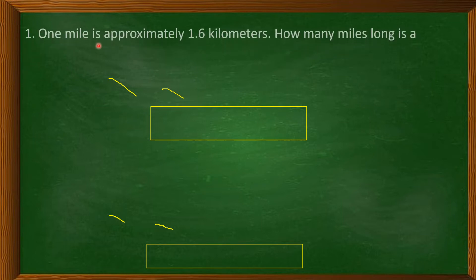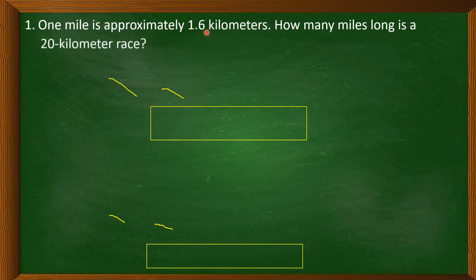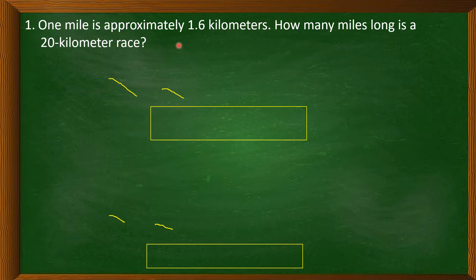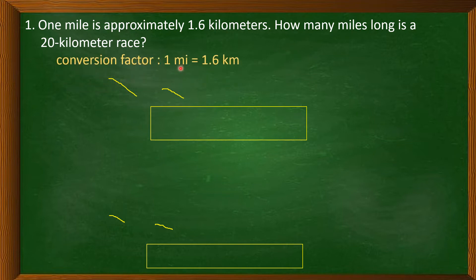First problem: One mile is approximately 1.6 kilometers. How many miles long is a 20-kilometer race? This problem is asking us to convert 20 kilometers to miles. We will be using the conversion factor that involves kilometers and miles: 1 mile is equal to 1.6 kilometers.